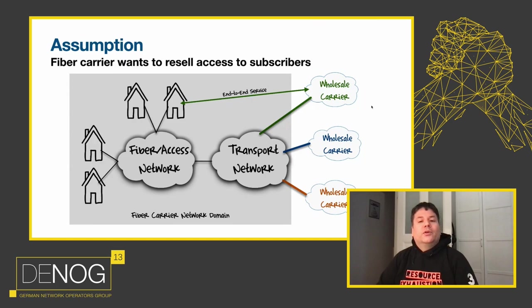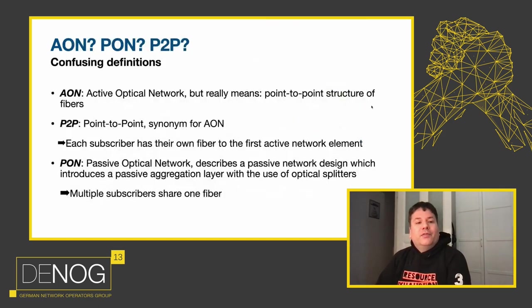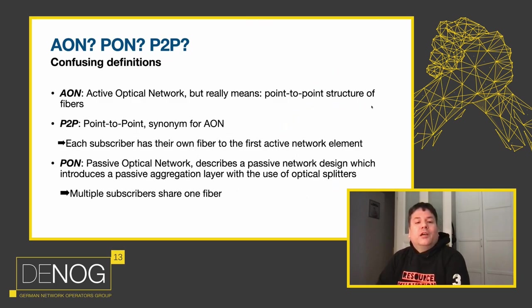I'm concentrating on that model. Before we dive in, a couple of definitions: AON actually means Active Optical Network, but there's no active component as such — what we mean is a point-to-point structure of fibers, also called P2P. Each subscriber has their own fiber to the first active network element — no sharing. By contrast, PON — Passive Optical Network — introduces splitters and a passive aggregation layer. Multiple subscribers share one fiber. The advantages and disadvantages of that we'll discuss later.